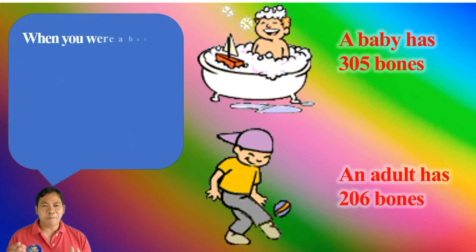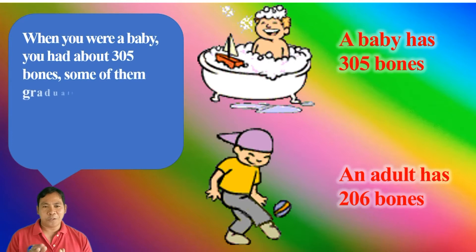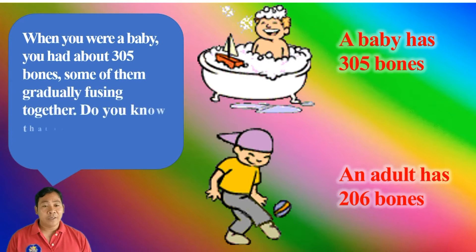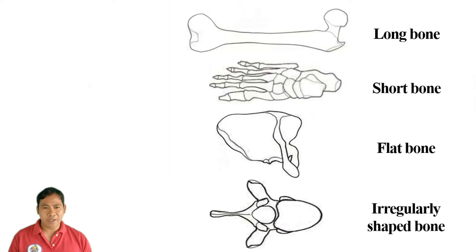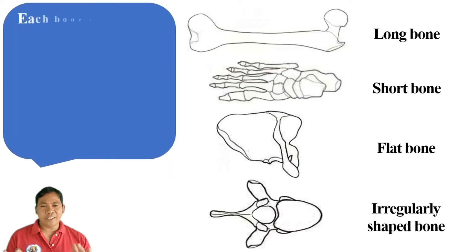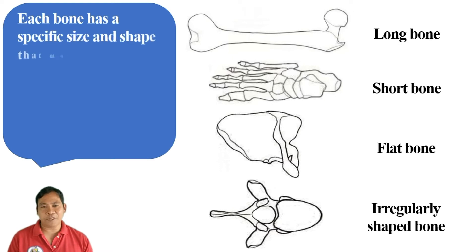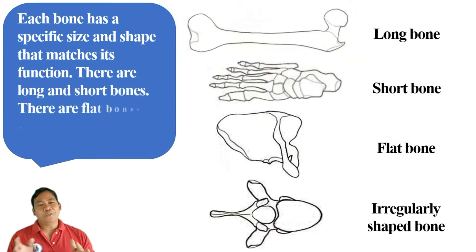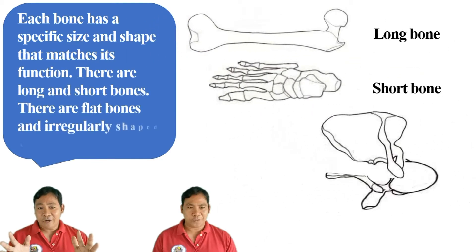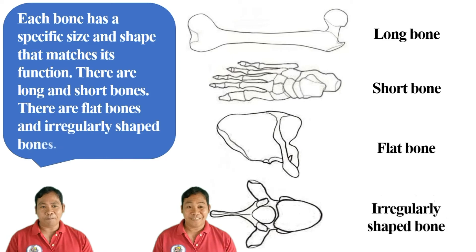When you were a baby, you had about 305 bones, and some of them gradually fused together. Did you know that there are around 206 bones in your body? Each bone has a specific size and shape that matches its function. There are long and short bones, flat bones, and irregularly shaped bones.